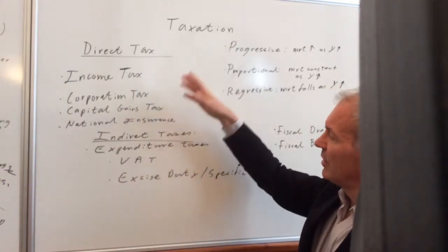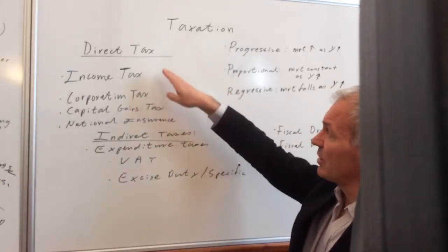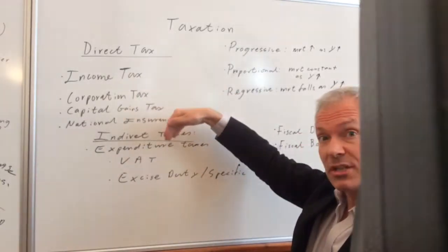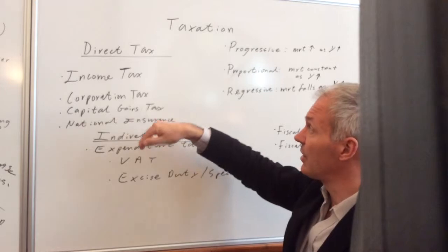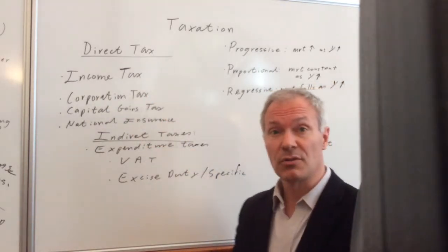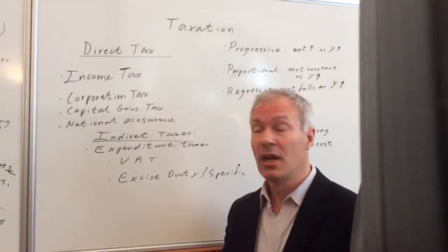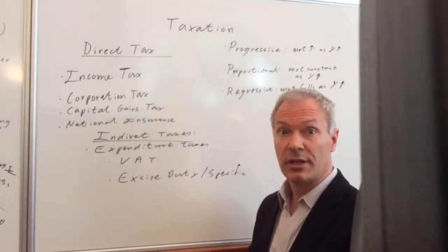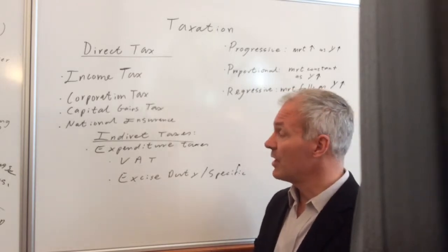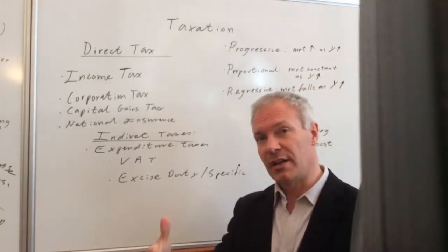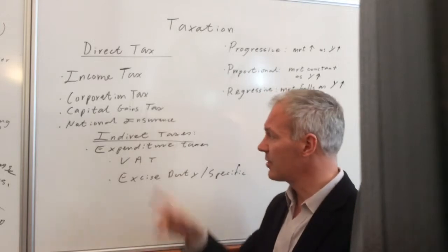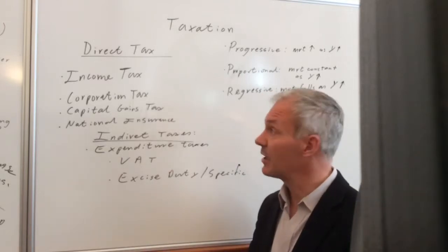There are two types of tax that we need to distinguish. One is direct taxes, the other is indirect taxes. Direct taxes tend to be on things such as profits or income or wealth, and the incidence of the tax can't be shifted onto anyone else, unlike indirect taxes.